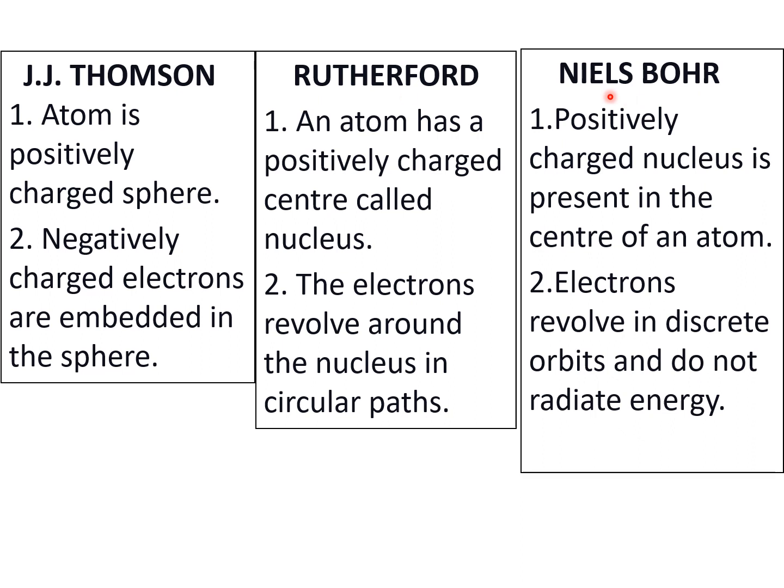So this is the best way: make a table like this and point-wise we will compare. J.J. Thomson, first point is atom is positively charged sphere. He equated the atom to a spherical pudding or a watermelon. Second point: negatively charged electrons are embedded in the sphere.